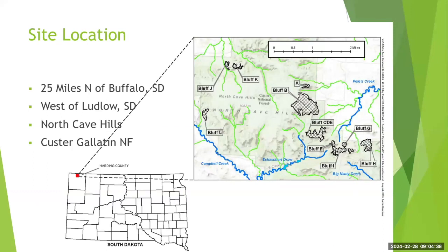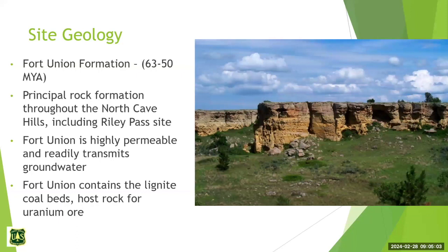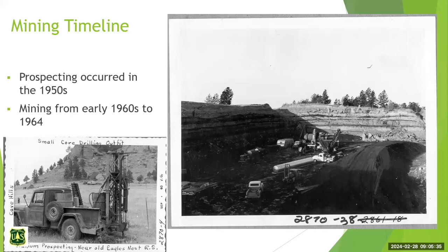Riley Pass is located in the far northwest corner of South Dakota, 25 miles north of Buffalo and just west of Ludlow. We have 12 bluffs at the site spread out in the North Cave Hills area. The landscape features flat sandstone cliffs and bluffs with rolling hills. The Fort Union formation is where we got the lignite beds that were mined in the 60s — these are about 63 to 50 million years old.